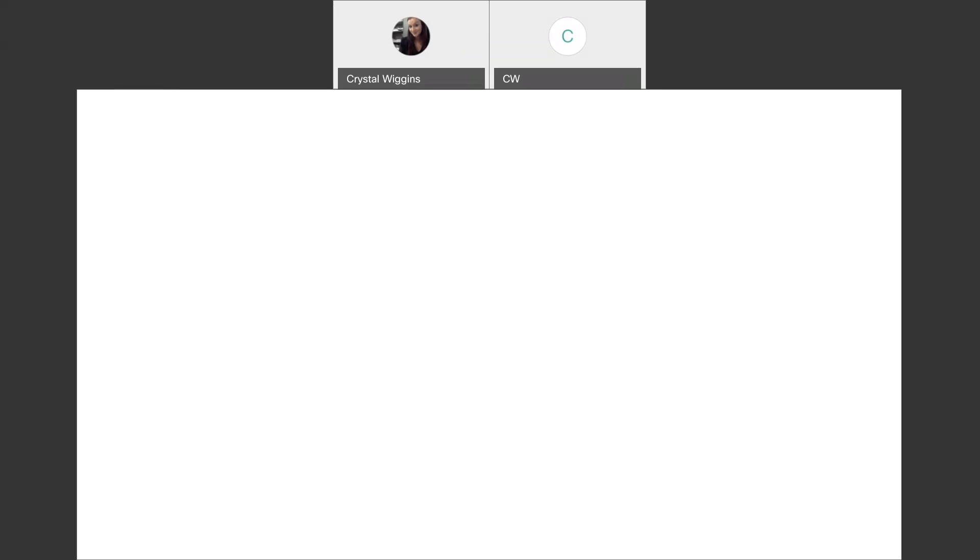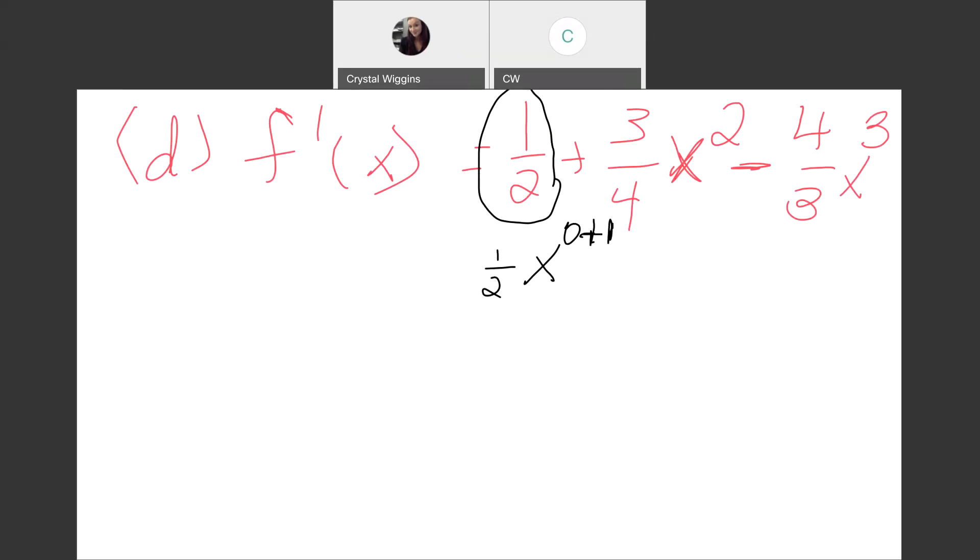One more example to do together. If we know the derivative, part d says that the derivative is the function one half plus three fourths x squared, minus four thirds x cubed. Following our power rule, here, the x is raised to the zero power, meaning a one. This is one half x to the zero power. So we need to add one to that, which gives us the x, and divide by one, which does nothing.